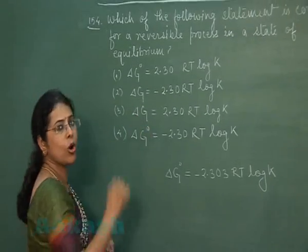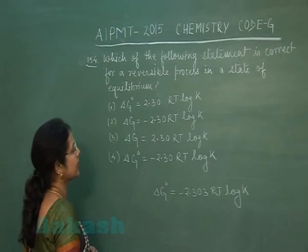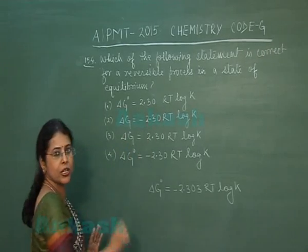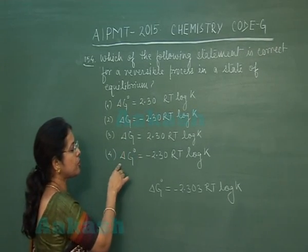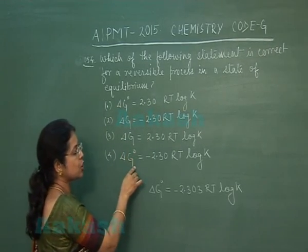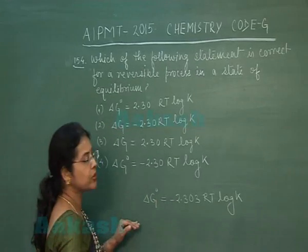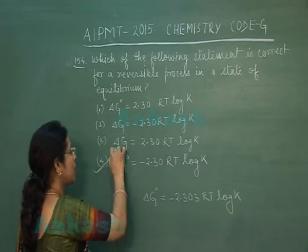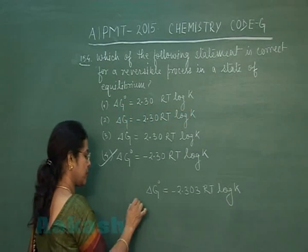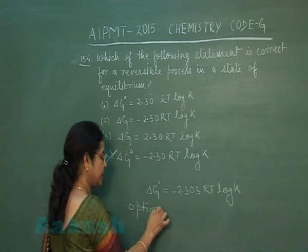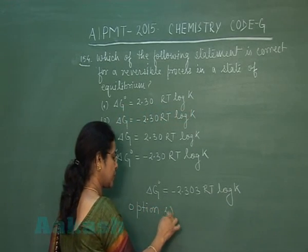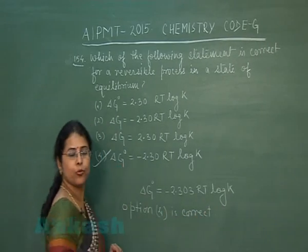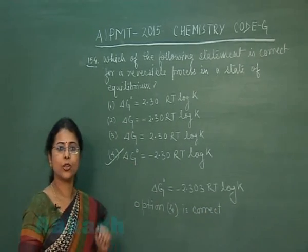Looking at the options: first option incorrect, second option incorrect, third option incorrect. The fourth option states ΔG° = −2.303 RT log K. So the fourth option is the correct option.